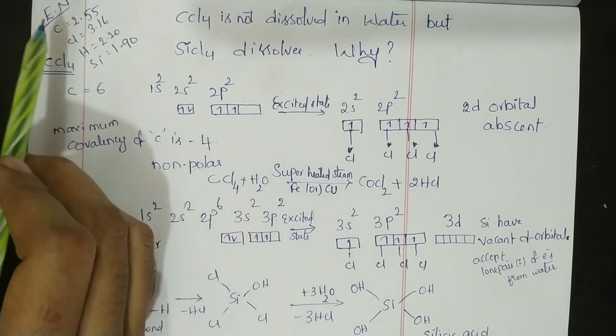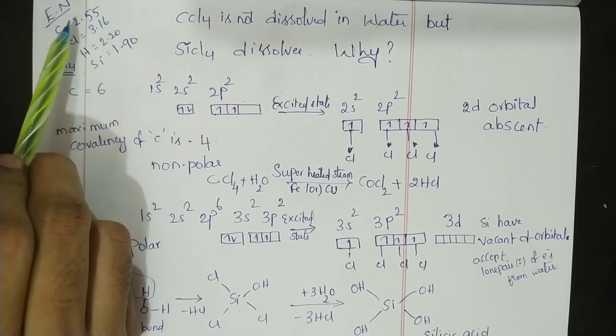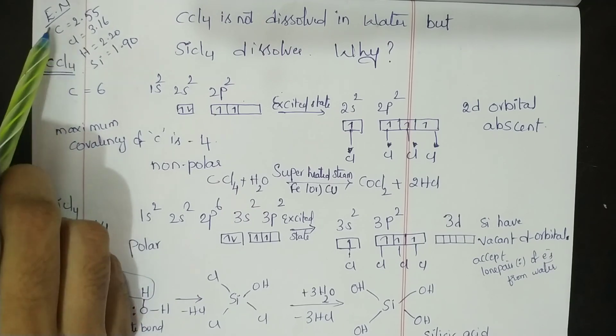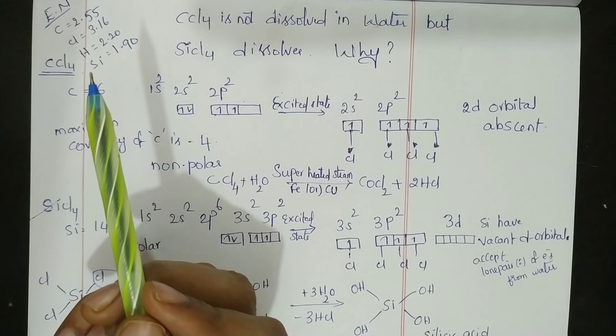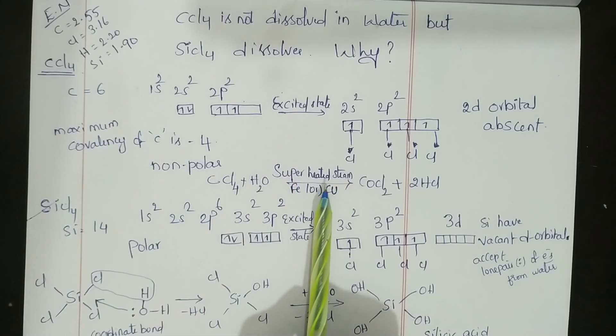Another difference is CCl4 is non-polar because there is less electronegativity difference between carbon and chlorine. Due to the strong carbon-chlorine bonds, it does not dissolve in water, but it can be hydrolyzed with superheated steam in the presence of iron or copper to form COCl2.